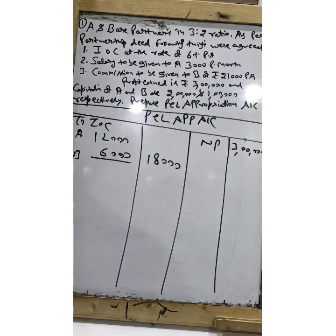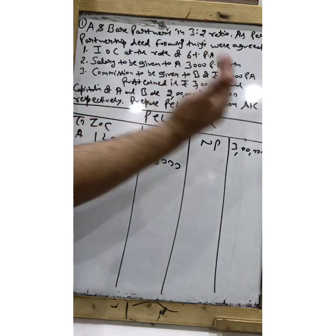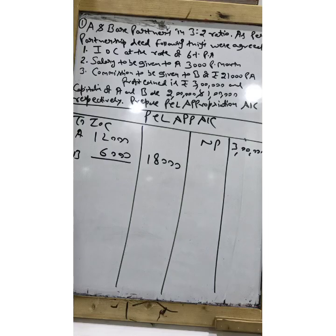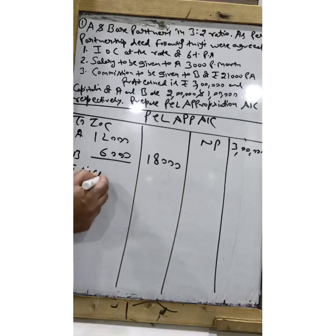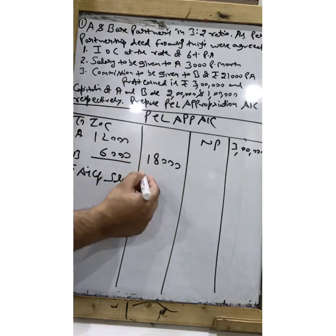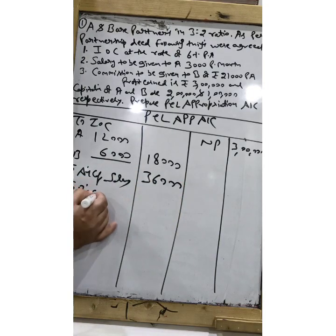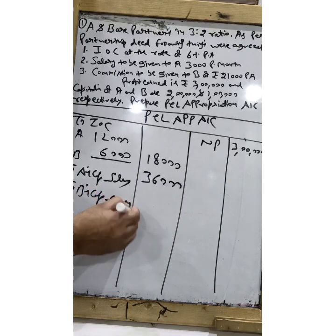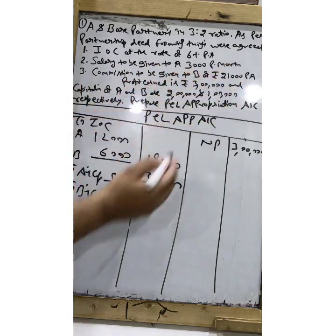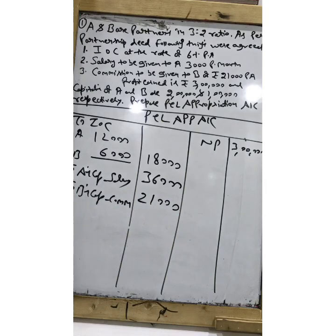Why on the debit side? As we discussed last class, for the firm it is an expense — matching concept. Salary to be given to A: ₹3,000 per month, so you write salary to A's capital — that will be ₹36,000 (12 × 3,000). Commission: you will write to B's capital — commission is ₹21,000 per annum.